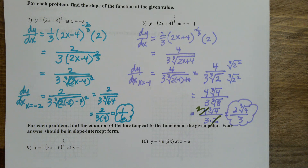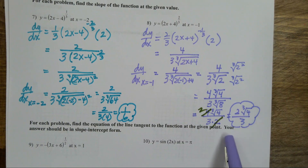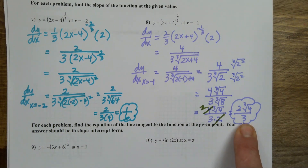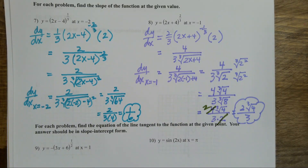If you have a calculator, sometimes it'll give you the exact form and sometimes it won't — some calculators are better than others. That's again why, especially on a multiple-choice test, getting it in the right form is going to be quicker than converting from a decimal. You'll see a few of these in calculus — so don't be afraid of things that look a little ugly.